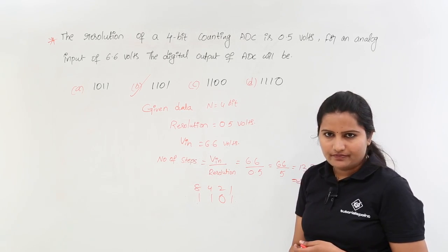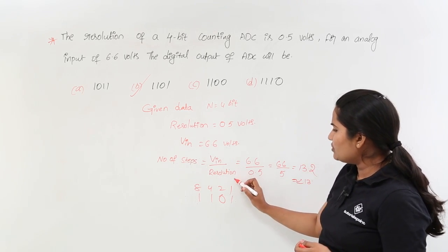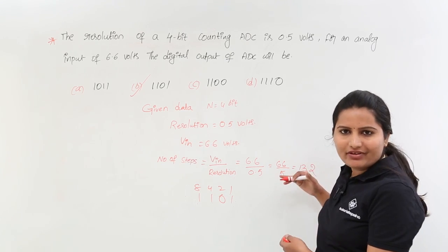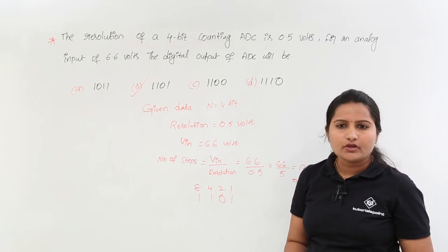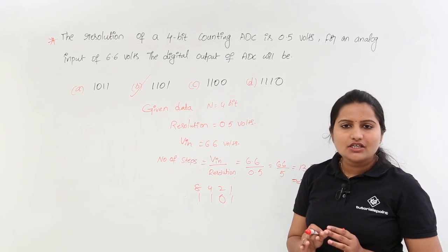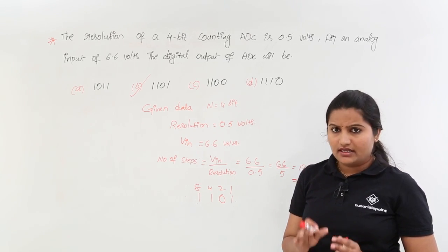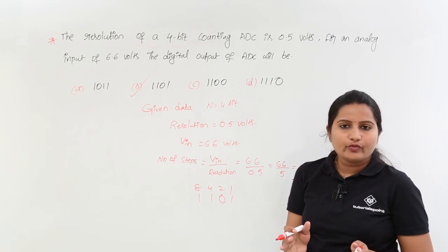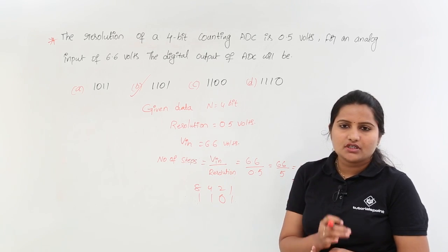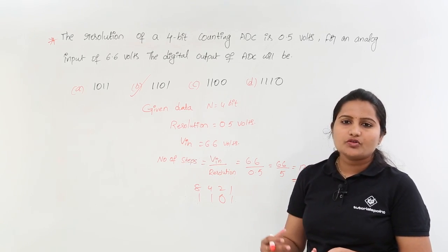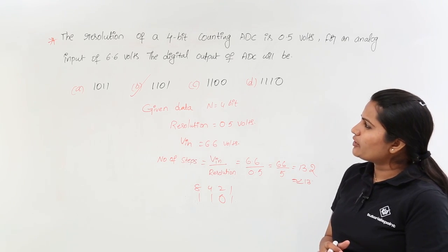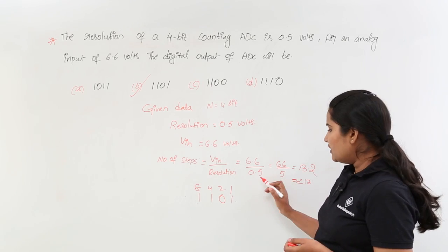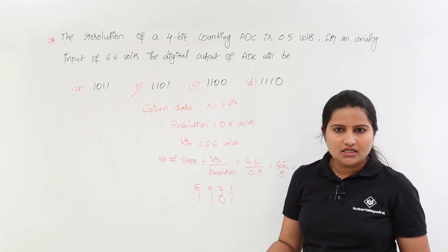For example, if you changed your resolution—for example, your resolution is equivalent to 0.6—then you are going to get 11 as your digital output. According to the resolution of ADC, you are going to get the output of ADC. Actually, for 6.6, if you want to get same 6.6, then you need to take resolution as one.